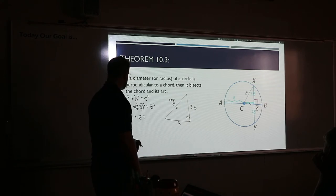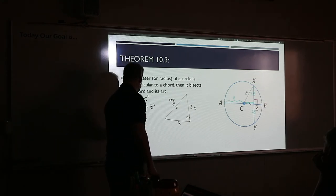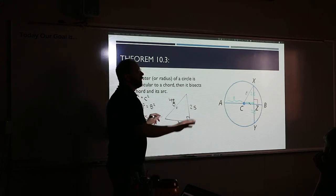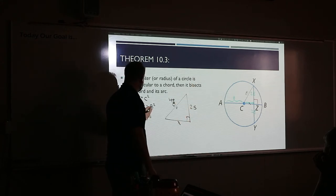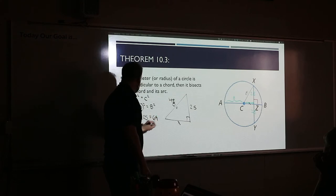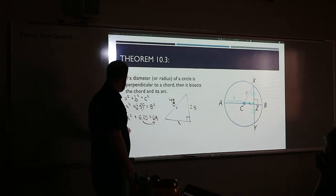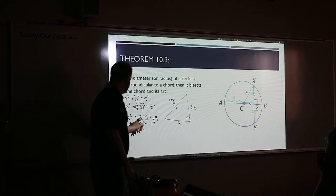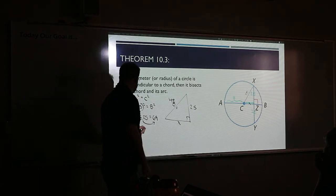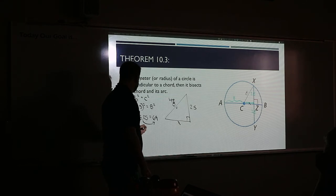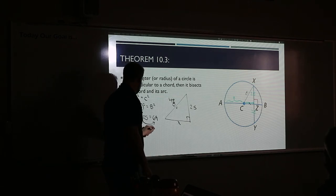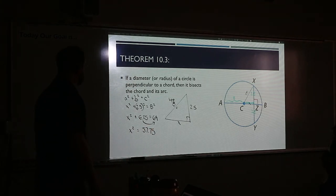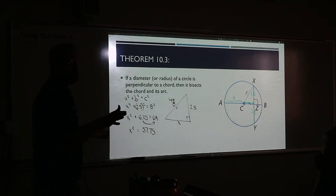So that's x squared plus 6.25 equals 64. Subtract that across and you get 57.75. So x squared equals 57.75. Take the square root of both sides — that's how you get rid of the power. You're trying to think of what number multiplied by itself gives you 57.75. It's going to be a decimal — 57 is between 7 squared (49) and 8 squared (64), so it's in between. We get approximately 7.59.